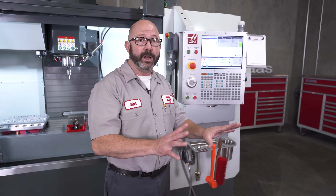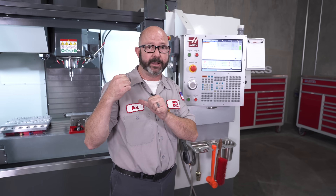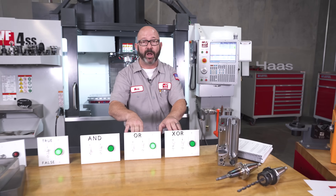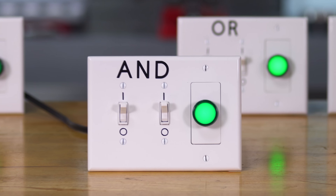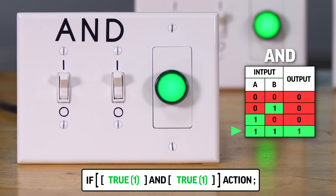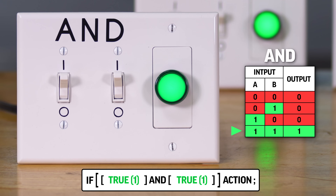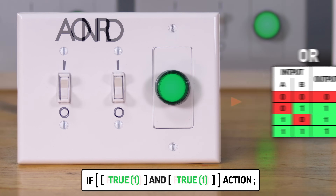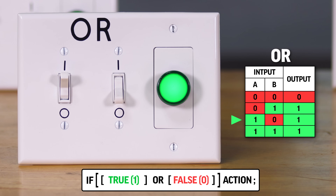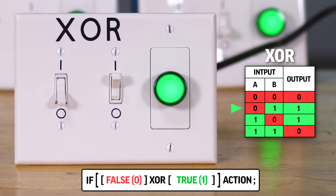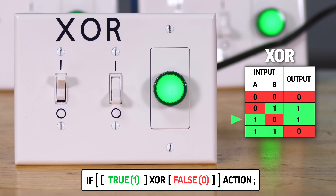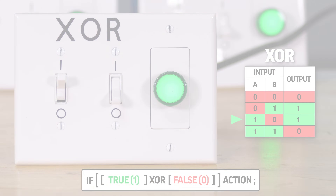We saw Boolean operators used earlier with our IF statement and pallets. With the AND operator, both parts of our expression must evaluate as TRUE — if either evaluates as FALSE, the entire statement is FALSE. With OR operators, only one of our expressions must be TRUE for the entire statement to evaluate as TRUE. With XOR (exclusive OR), either switch must be TRUE, but not both, in order to get a TRUE output. IF statements are like forks in the road, letting us go one way or the other based on the results of our IF statement lie detector test.